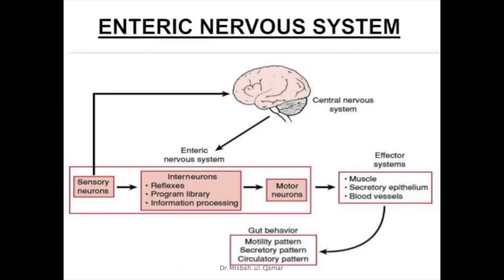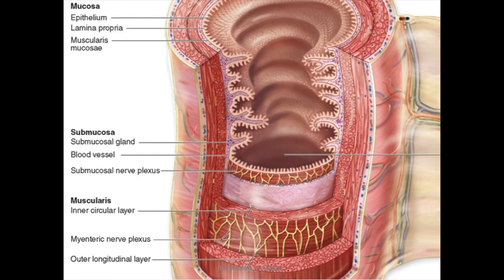The enteric nervous system begins in the esophagus and extends to the anus. Its neurons can be excitatory or inhibitory, and their activity can be modified by extrinsic nerves. Sensory nerve endings originating in the gastrointestinal epithelium or gut wall send fibers to the enteric system, responsible for local effects and reflexes. The enteric nervous system consists of ganglionic and aganglionic plexuses.